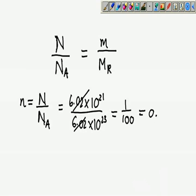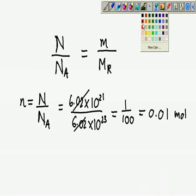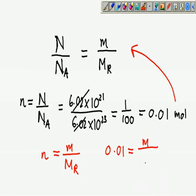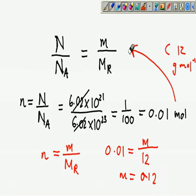Now you bring this mole into this: number of moles equals mass over molar mass. Therefore, 0.01 equals actual mass, which is something we are looking for, and carbon atoms, the molar mass is 12 grams per mole. So 12 times 0.01, your actual mass is 0.12 grams.